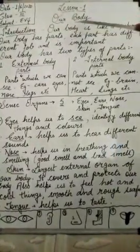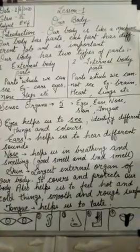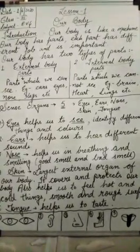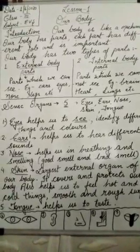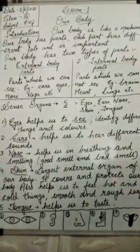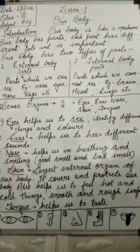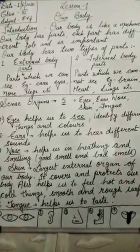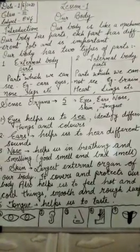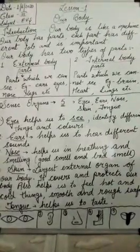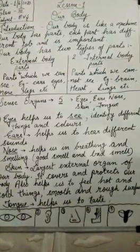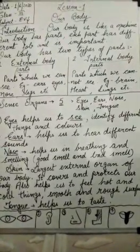Our body is like a machine. As you all know, what is a machine? Machine woh cheez hoti hai jis mein different parts hoti hain, aur ek particular kaam woh karti hai. Aur har different part ka ek particular kaam hota hai. Iska matlab machine ke saare parts ka barabar kaam karna bahut zaroori hai. Agar machine ka koi bhi ek part kharab ho jaata hai, toh woh machine properly kaam nahi kar sakti.